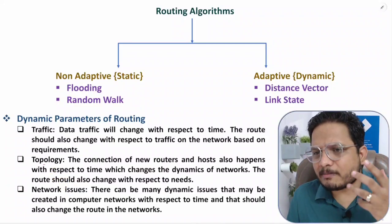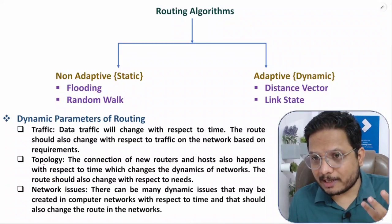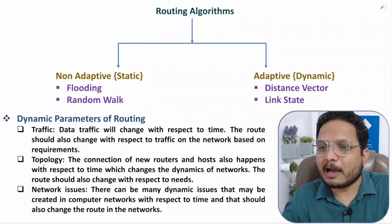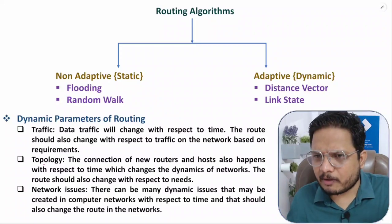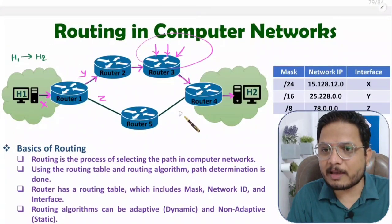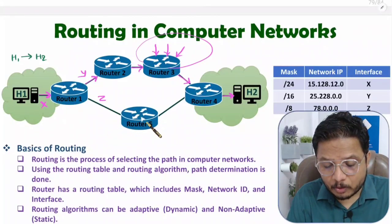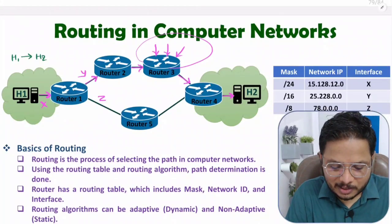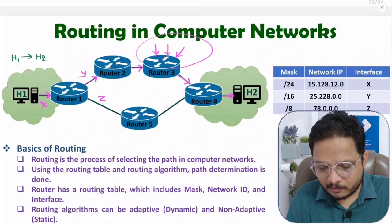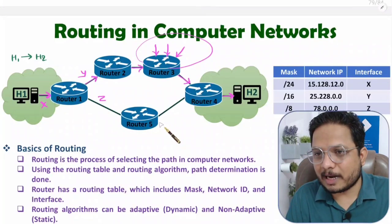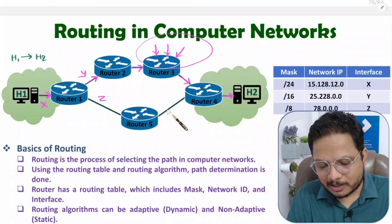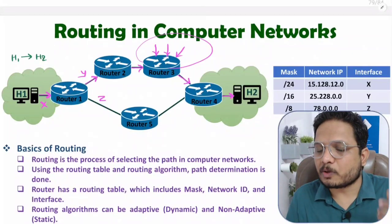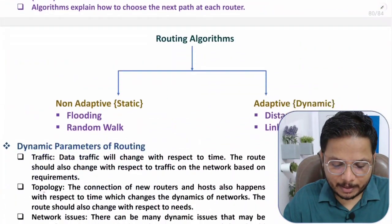Another dynamic parameter is topology. The internet is flexible — many devices get added or removed frequently. New routers or hosts may connect, and links may be cut. If a wire is cut, the network topology changes and a router may reroute communication via a different path. Topology changes continuously with respect to time.